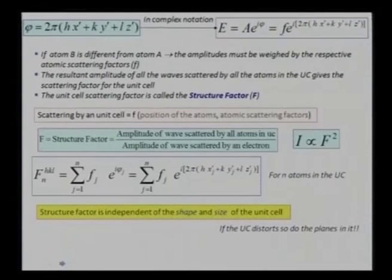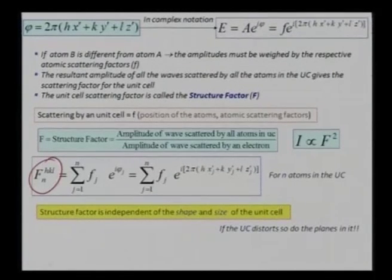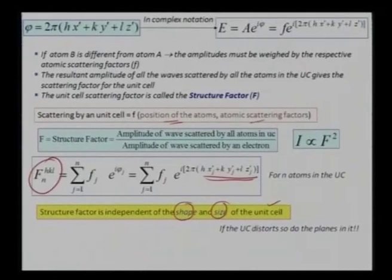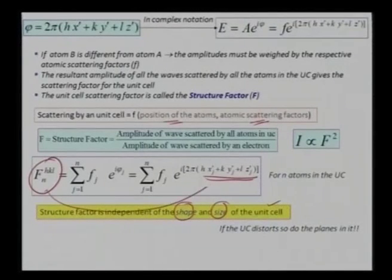The overall structure factor is not dependent only on the positions of my atoms in the unit cell. The structure factor is independent of the shape and size of the unit cell — it just depends on the location or positions of atoms and their atomic scattering factors. The overall structure factor depends on Miller indices and the location of atoms in the unit cell.